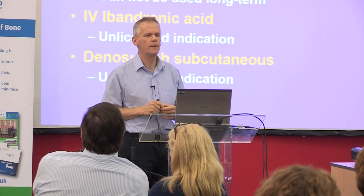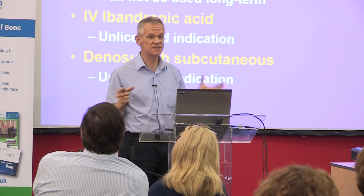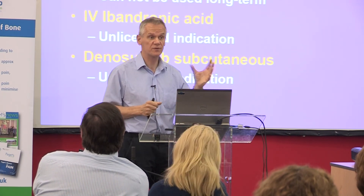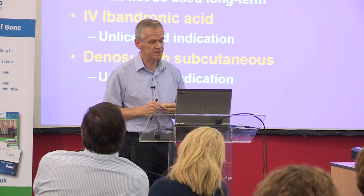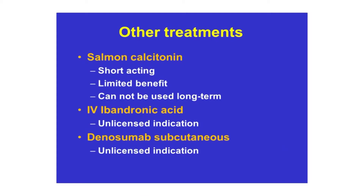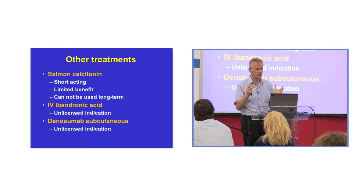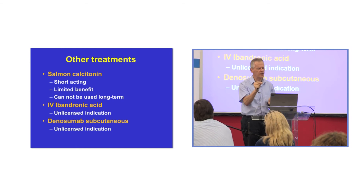We do have another treatment which is still around — calcitonin, a hormone that acts on bone. The one we use at the moment is extracted from salmon. It's an injection, often given daily or several times a week. It's quite short-acting, has limited benefit, and is definitely not as good as bisphosphonates. There are a few situations where we might use it — it's quite rapidly acting, and sometimes in patients with Paget's disease in the spine pressing on the nerves or spinal cord, we might use it as well as a bisphosphonate.